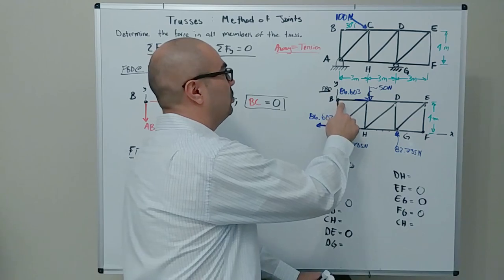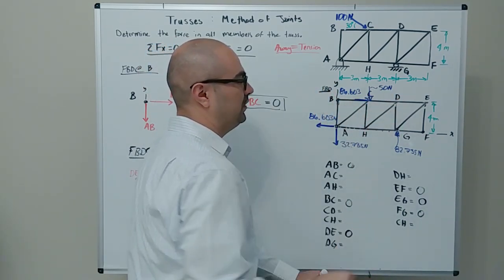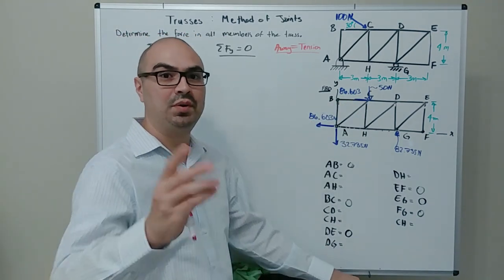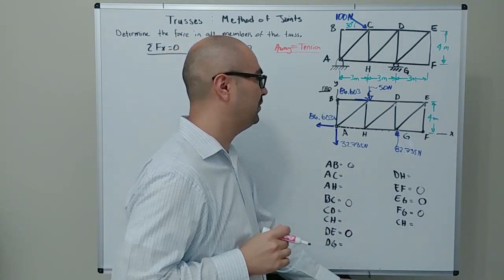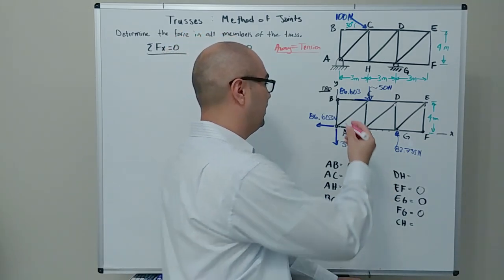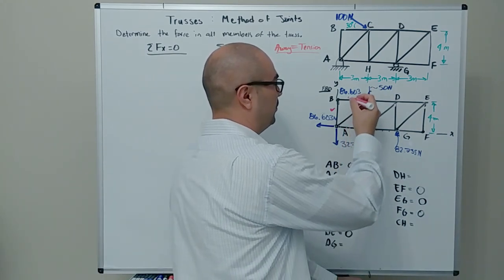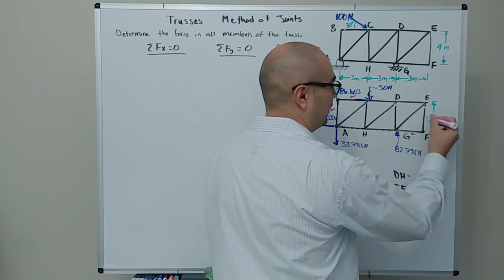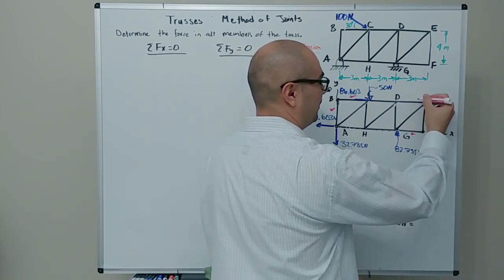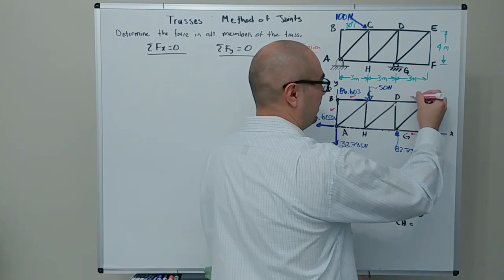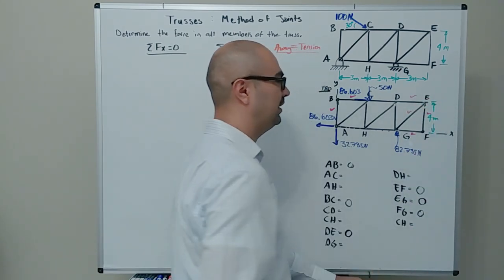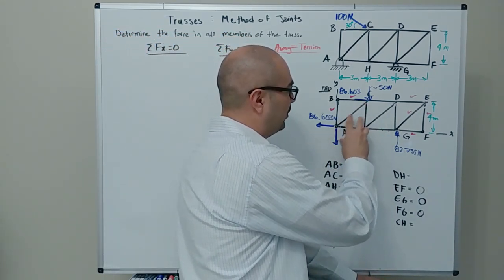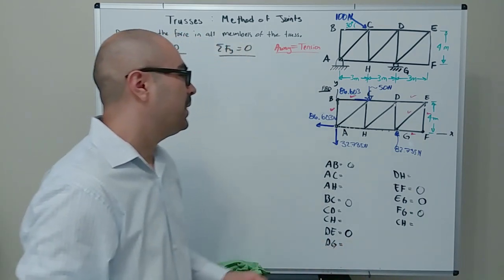So far we've identified zero force members: AB, BC, GF, EF, DE, and EG. At joint D we now have three unknowns, and at G there's an external load, so we can't identify more zero force members by inspection alone. We'll continue with free body diagrams at each remaining joint.